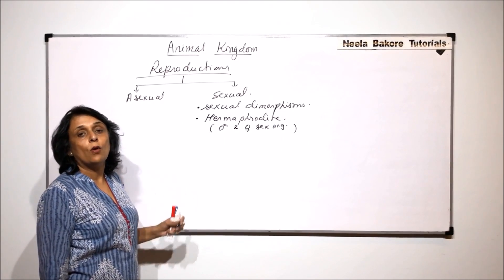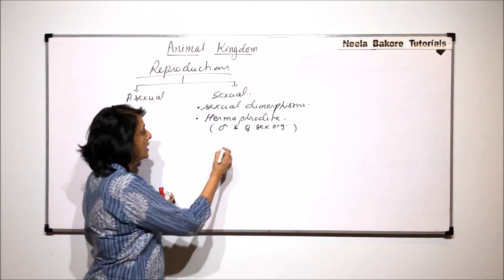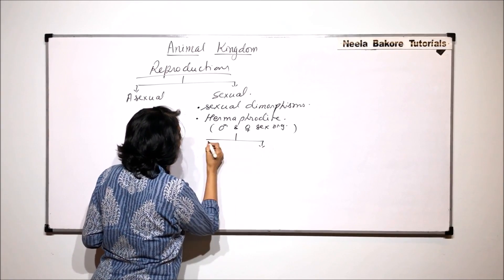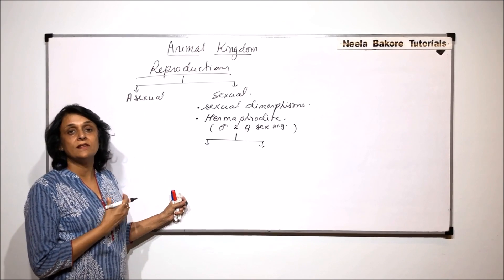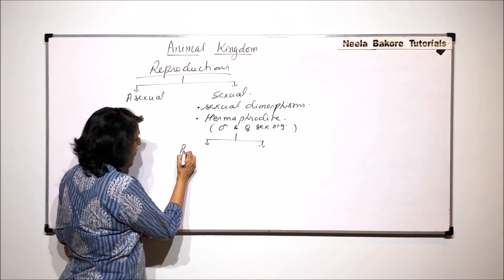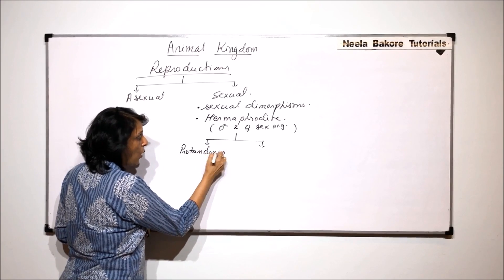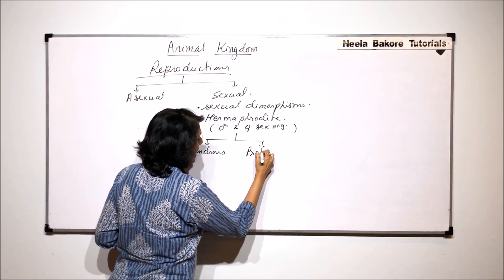But in order to favor cross fertilization, these hermaphrodites again may show two adaptations or two changes. They can be protandrous or protogynous.